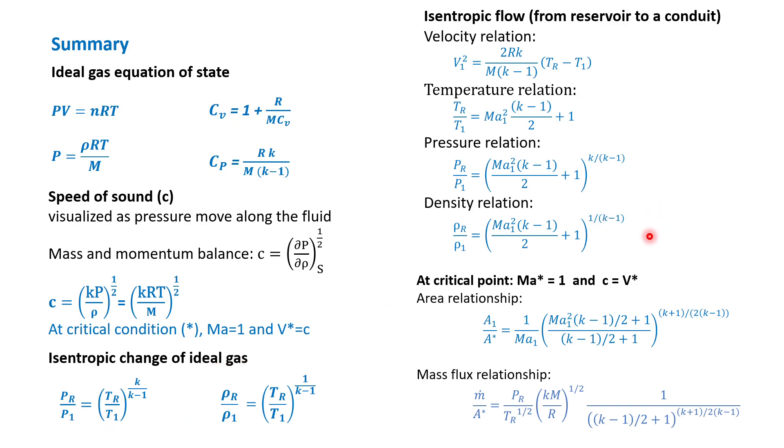Then for isentropic flow, we have four relationships. We have velocity to temperature relationship, we have the temperature, pressure, and density relationship.